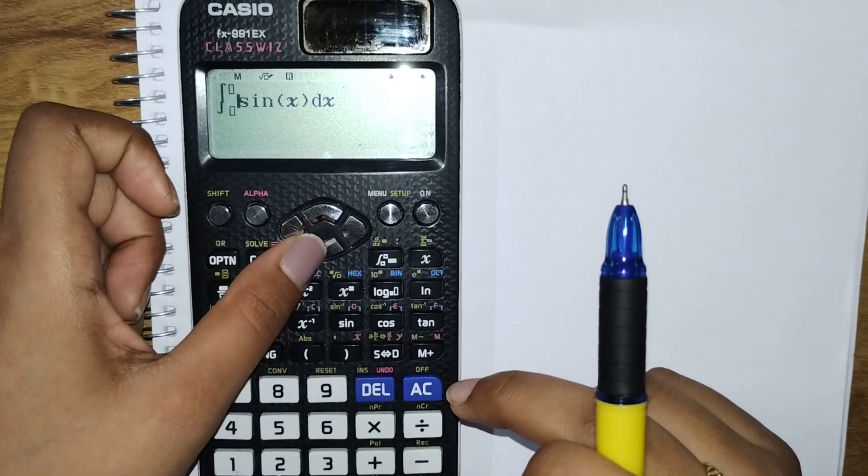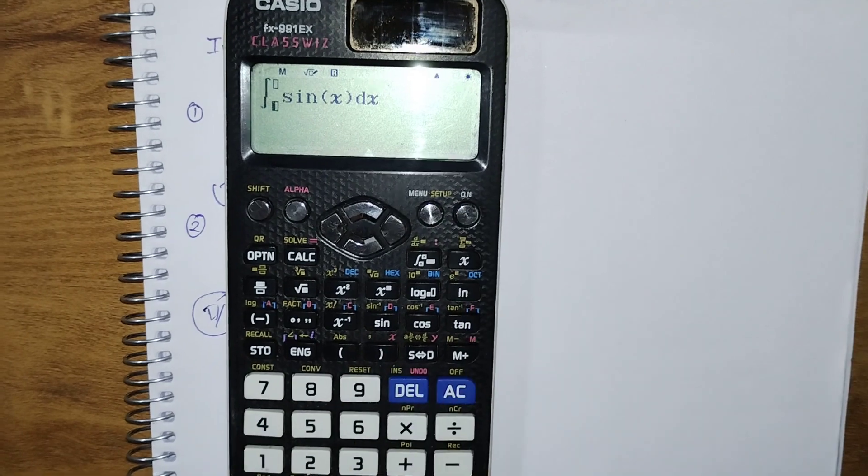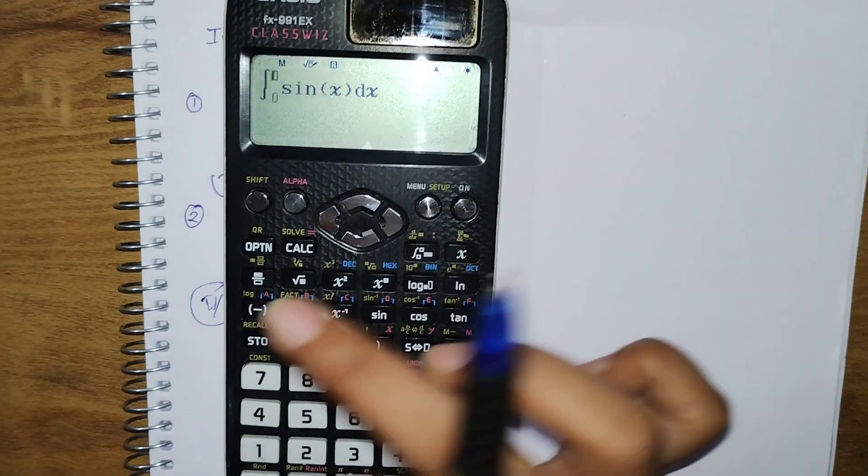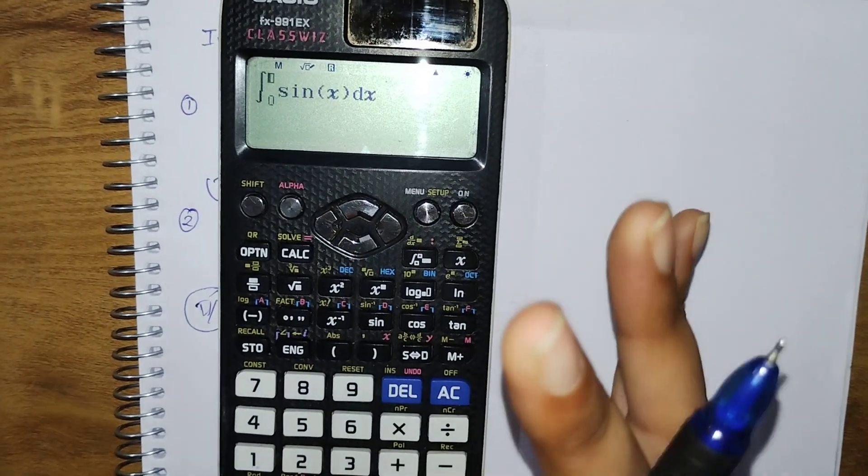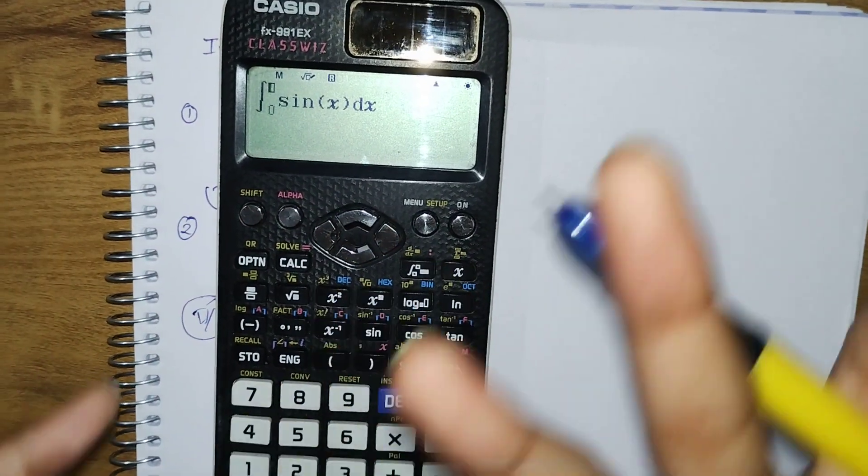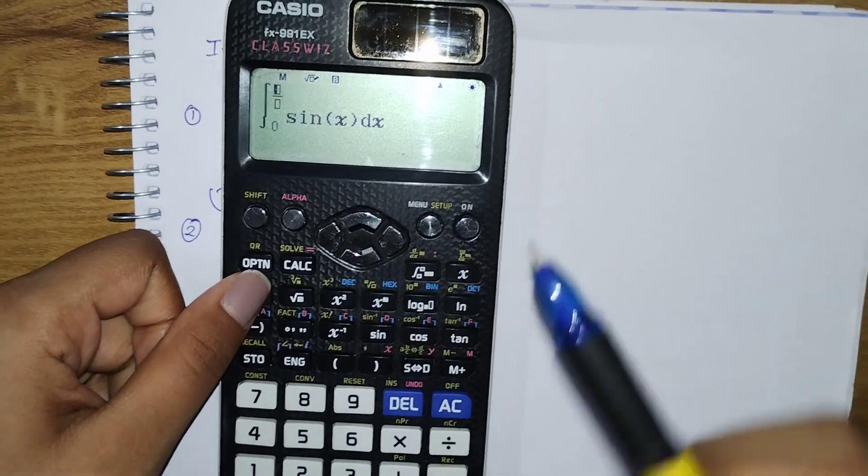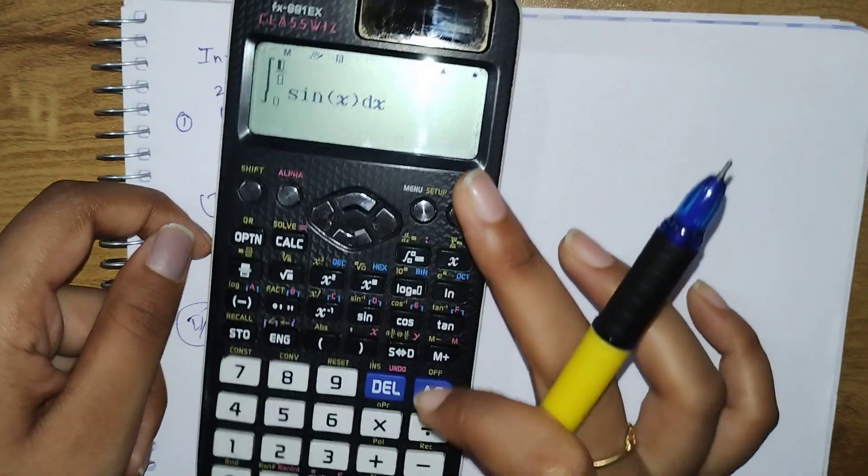Now we just need to go to our limits. What are the limits? First thing is zero, great. Next is we need π/2. It's in the form of a division, so click on this option.